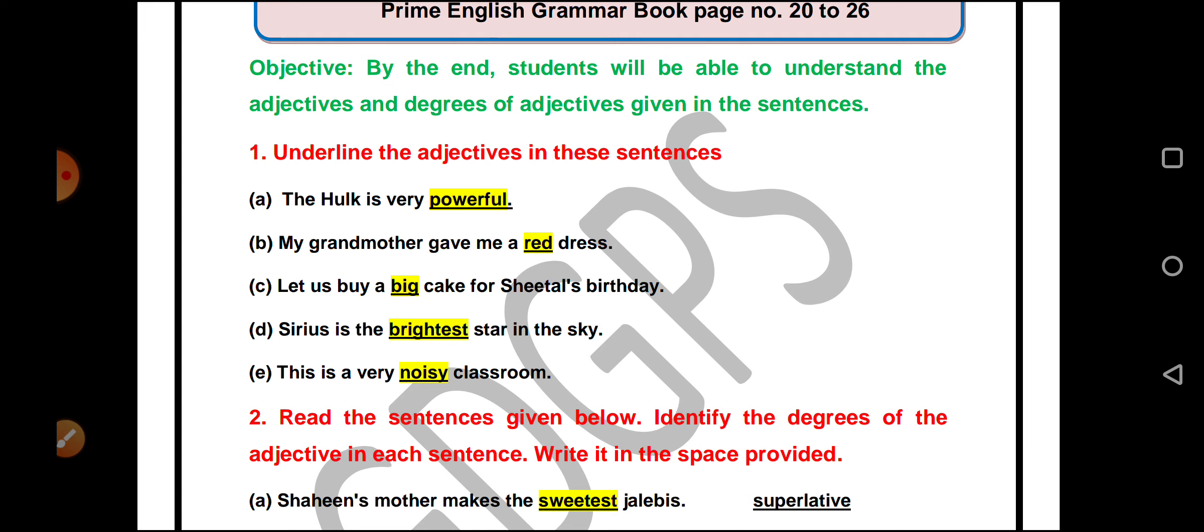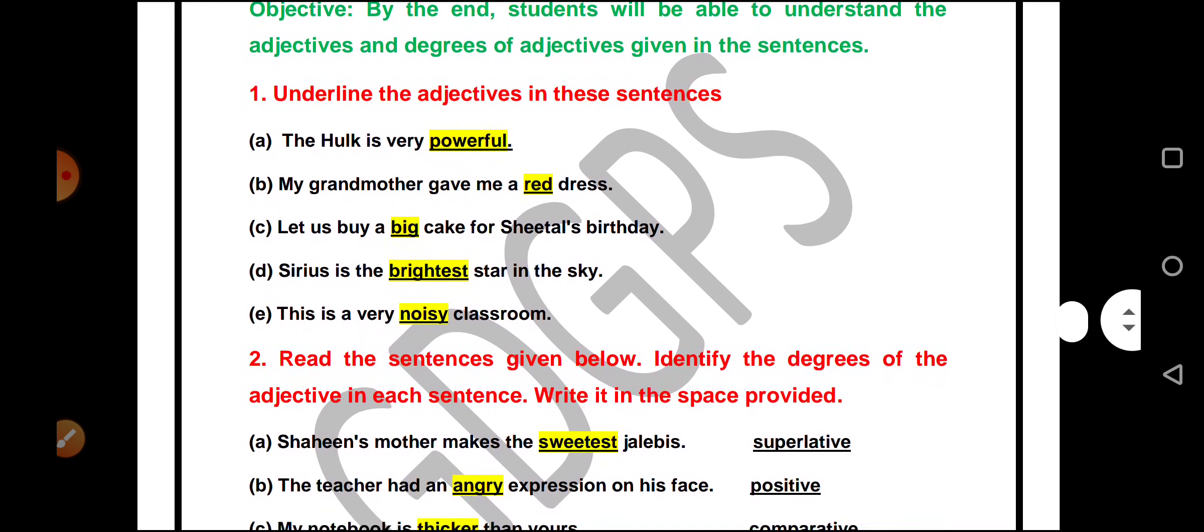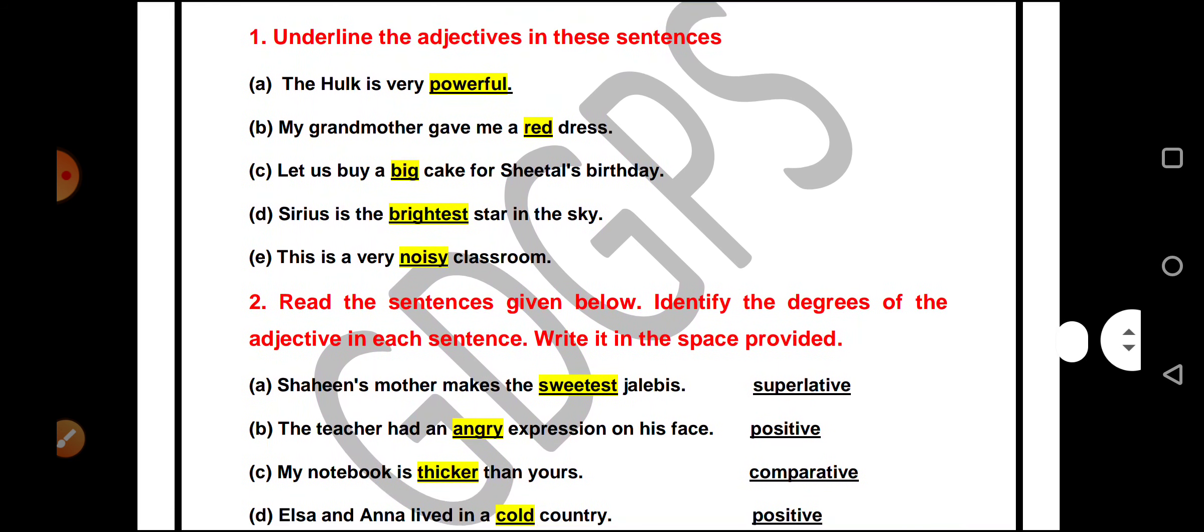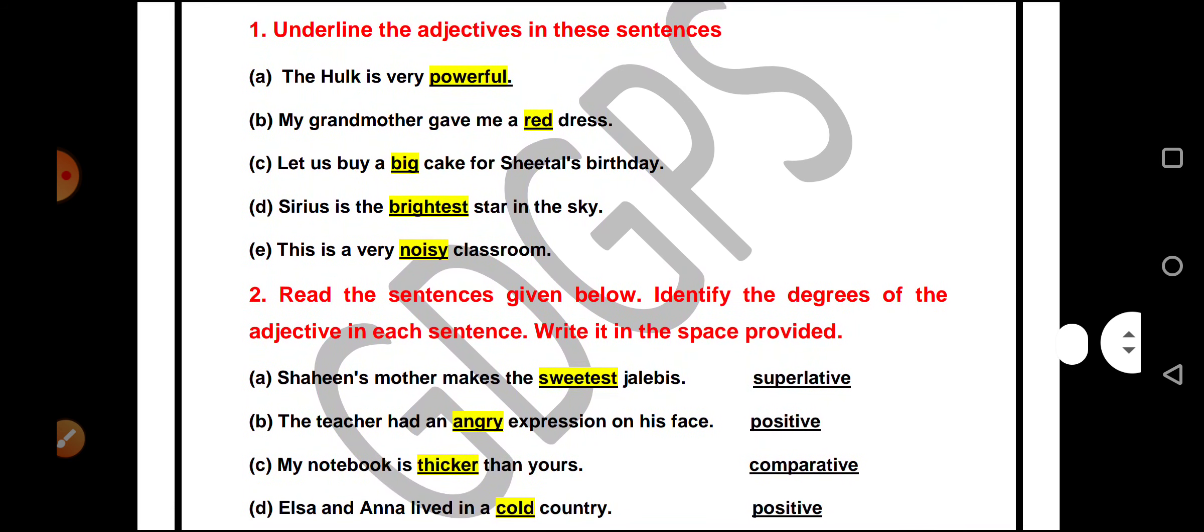Sirius is the brightest star in the sky. What type of star it is? Brightest. The brightest is the adjective. This is a very noisy classroom. What type of classroom is this? Very noisy. So noisy becomes the adjective.